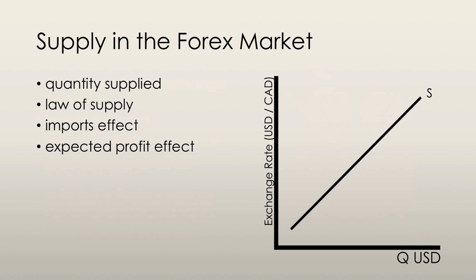The quantity of a currency supplied in the foreign exchange market is the amount that traders plan to sell during a given time period. The law of supply of foreign exchange states that the higher the exchange rate, the greater is the quantity of a currency supplied. The imports effect states that the larger the value of our domestic imports, the larger is the quantity of our currency supplied. The value of our imports depends on the prices of foreign-produced goods expressed in our country's currency, and these prices depend on the exchange rate.